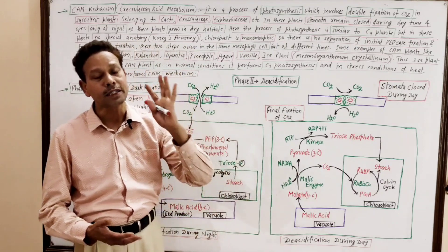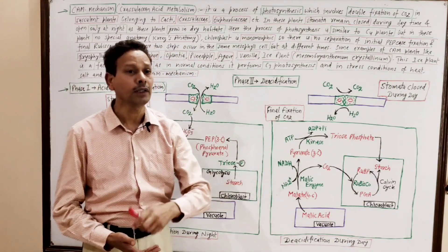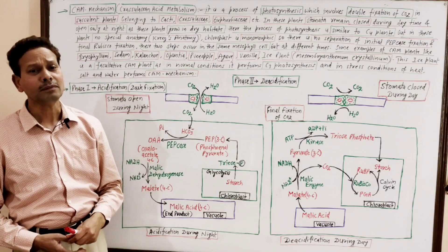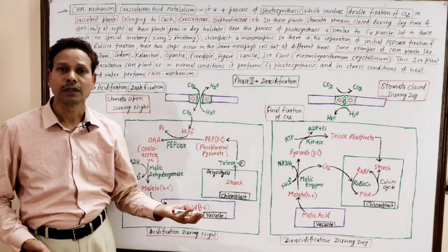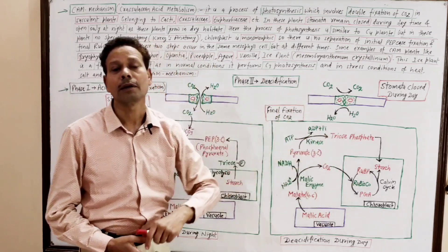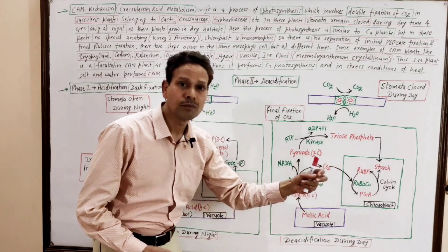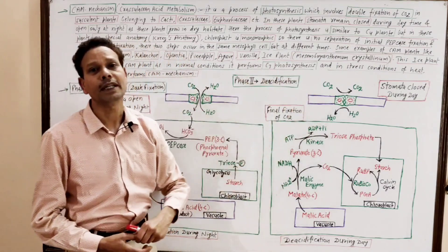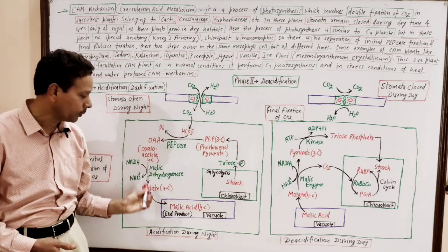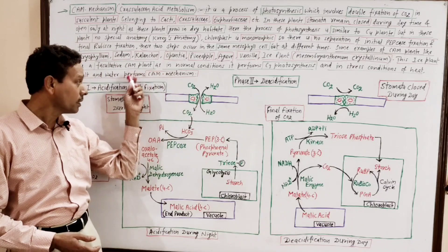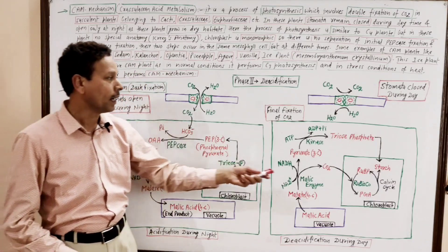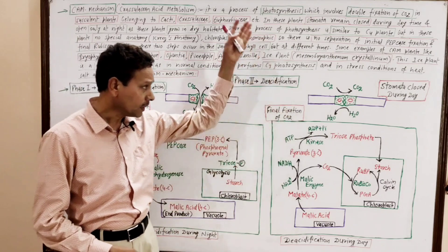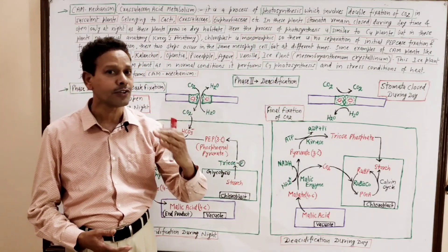In CAM plants, double fixation of CO2 occurs: the initial fixation takes place during night when stomata open and atmospheric CO2 is used — this is acidification and dark fixation. But during daytime, when stomata remain closed, the CO2 is internal CO2 produced by deacidification of malic acid — this second phase is deacidification and light fixation. So the first phase is the dark phase and the second fixation occurs during daytime in light, so it is the light phase.